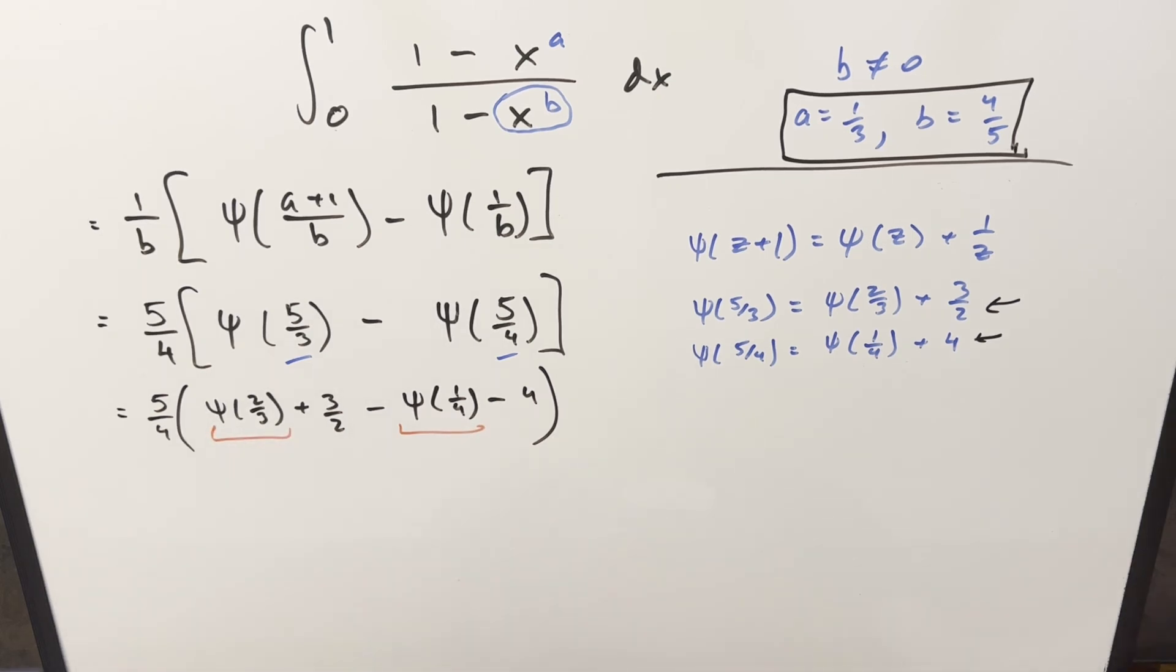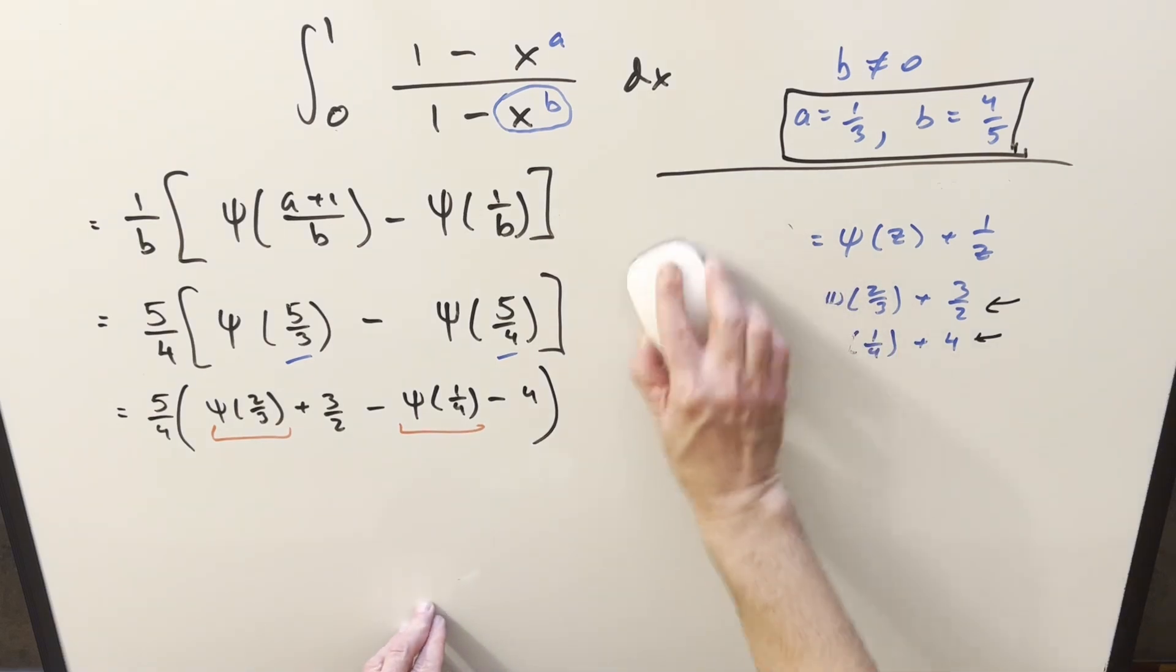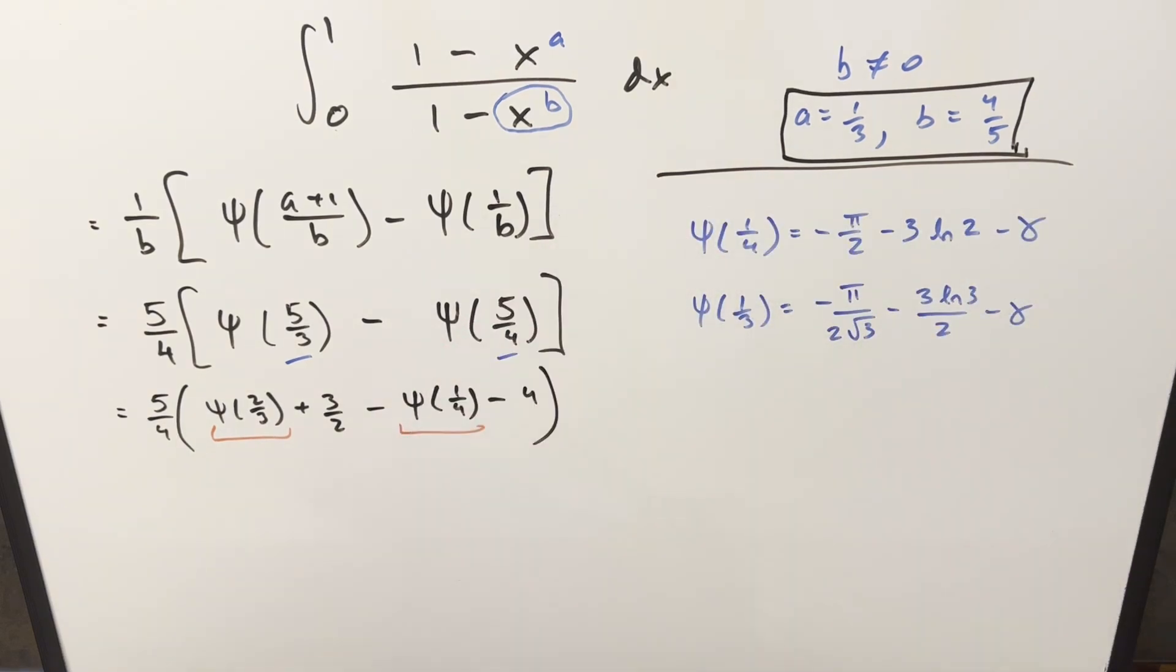Well, for two of these, there's two values I derived in previous videos. So we have up top here the formula for digamma of 1/4. So we're all set with that one. We have the value here for digamma of 1/3. I believe I also did digamma of 2/3. I just can't remember what it is. So what we're going to do is let's use the digamma of 1/3 value to get to the digamma of 2/3 value.